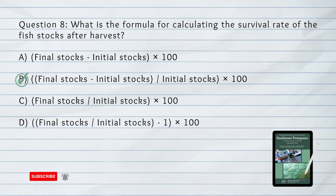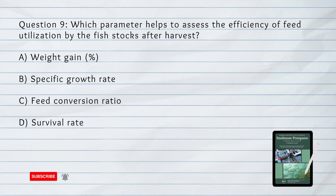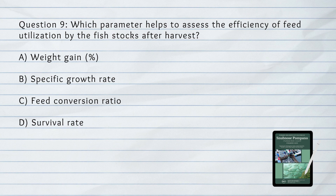Number 9. Which parameter helps to assess the efficiency of feed utilization by the fish stocks after harvest? A. Weight gain. B. Specific growth rate. C. Feed conversion ratio. D. Survival rate. Answer: C. Feed conversion ratio.